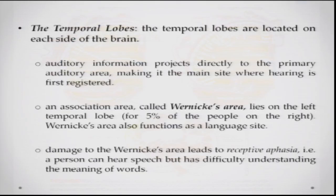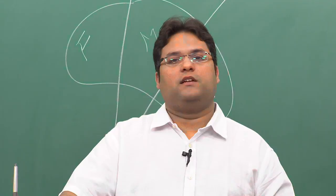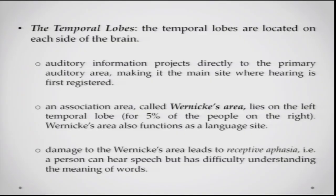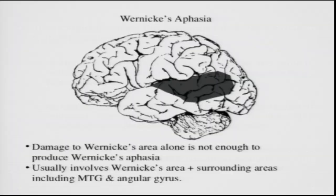The temporal lobes are located on each side of the brain right above the ear. Auditory information projects directly to the primary auditory area in the temporal lobe, making it the main site where hearing is first registered. An association area in the left temporal lobe called Wernicke's area acts as a language comprehension site. Damage to Wernicke's area leads to receptive aphasia — the inability to understand language.